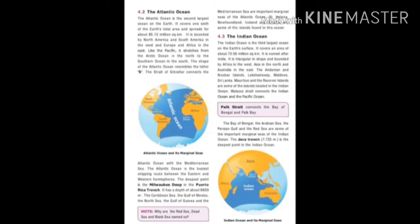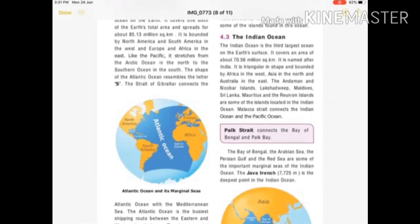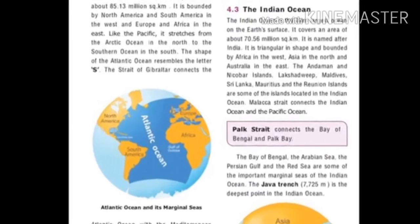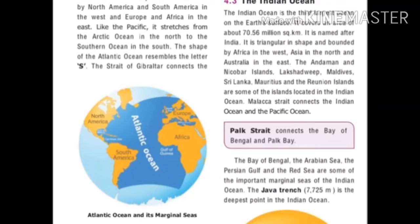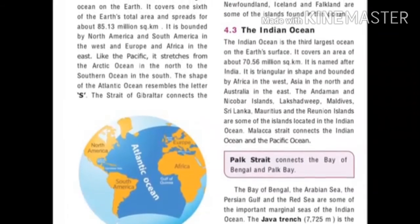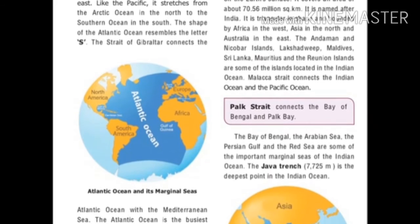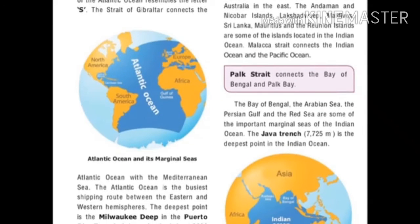The Atlantic Ocean is the second largest ocean on the earth. It covers 1/6 of the earth's total area and spreads about 85.13 million square kilometers. It is bounded by North America and South America in the west, and Europe and Africa in the east. The shape of the Atlantic resembles the letter S. The Strait of Gibraltar connects the Atlantic Ocean and the Mediterranean Sea.